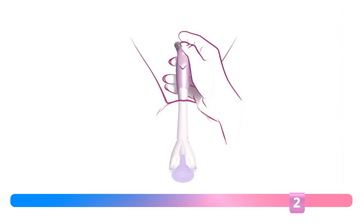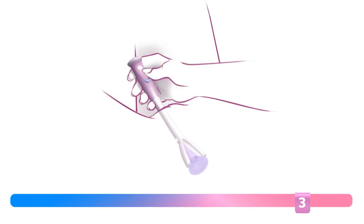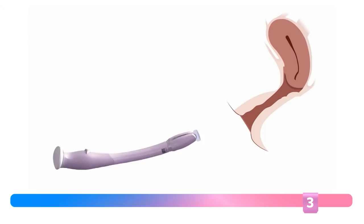Step 3. Release the cervical cap by depressing the cap release button with three raised dots. Remove the applicator. The removal string is now exposed.